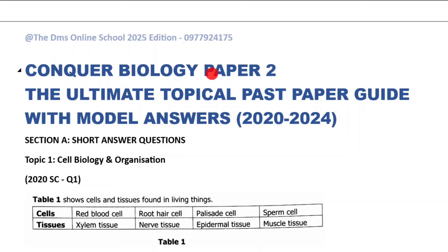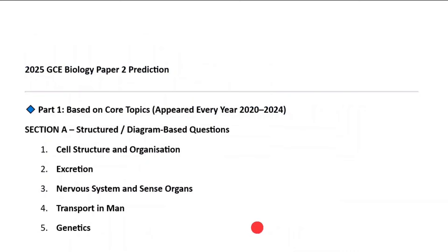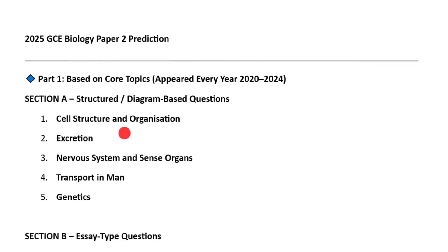So let's go back to the biology prediction. From Section A — diagram-based questions — these are the topics that have been appearing consistently from 2020 to 2024: number one, cell structure and organization; number two, excretion; number three, nervous system and sensory organs; number four, transport in man; and number five, genetics.